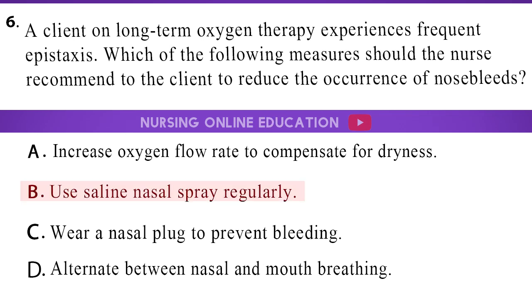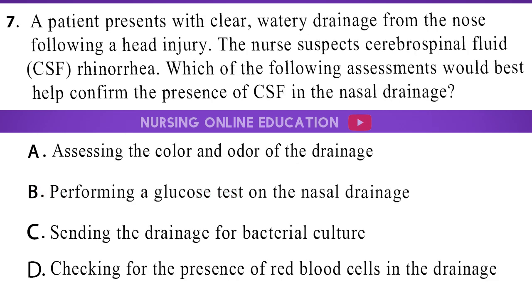The answer is option B: Use saline nasal spray regularly. A patient presents with clear, watery drainage from the nose following a head injury. The nurse suspects cerebrospinal fluid (CSF) rhinorrhea. Which of the following assessments would best help confirm the presence of CSF in the nasal drainage? A. Assessing the color and odor of the drainage. B. Performing a glucose test on the nasal drainage. C. Sending the drainage for bacterial culture. D. Checking for the presence of red blood cells in the drainage.